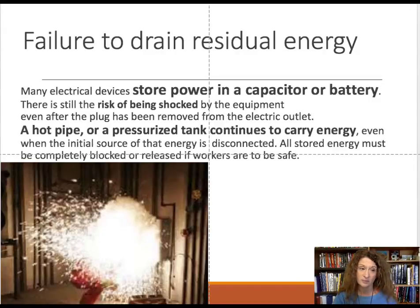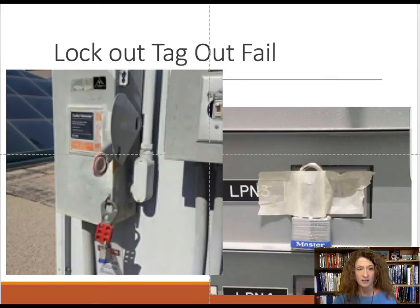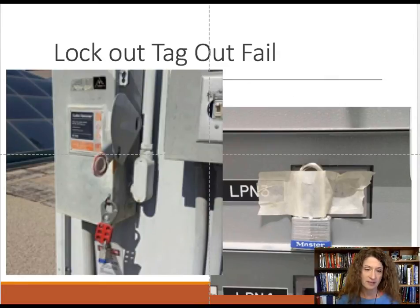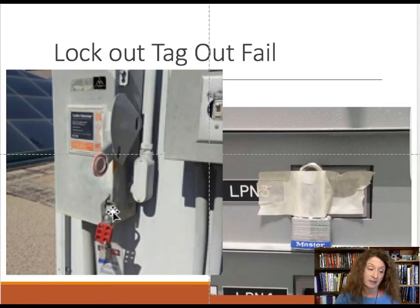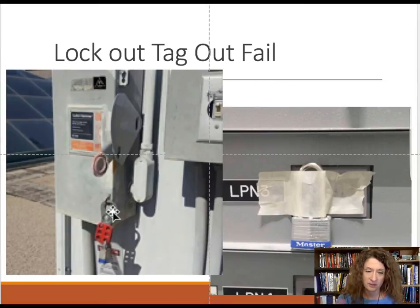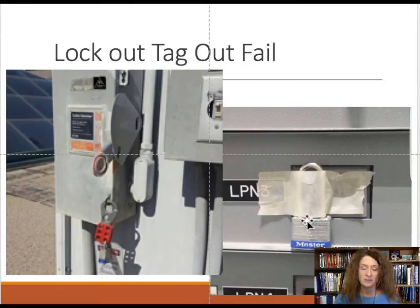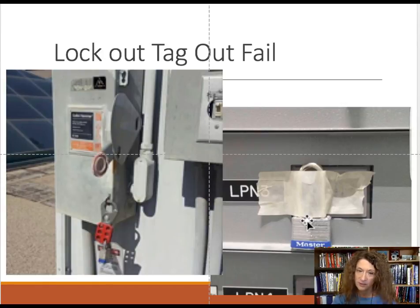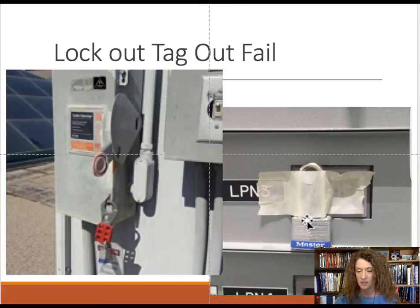Step 5 is sometimes missed — people lock out and tag out and consider themselves good to go. These are examples of lockout-tagout fails: one example shows locking out the box opening rather than the switch itself, which is not what would ultimately cause injury. A piece of tape is not considered a physical barrier — it can fall off — and a lock just hanging in space accomplishes nothing.